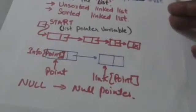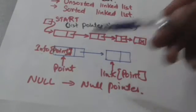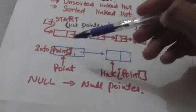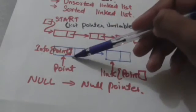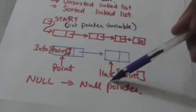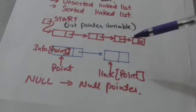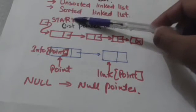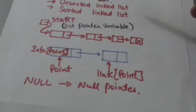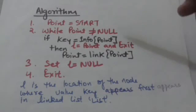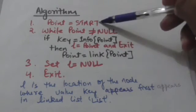Here, point is a pointer variable which points to a node of the linked list. info(point) is the content of the node which is pointed to by pointer variable point. link(point) points to the next node of the node pointed by pointer variable point. start is the list pointer variable which points to the first node of the linked list.